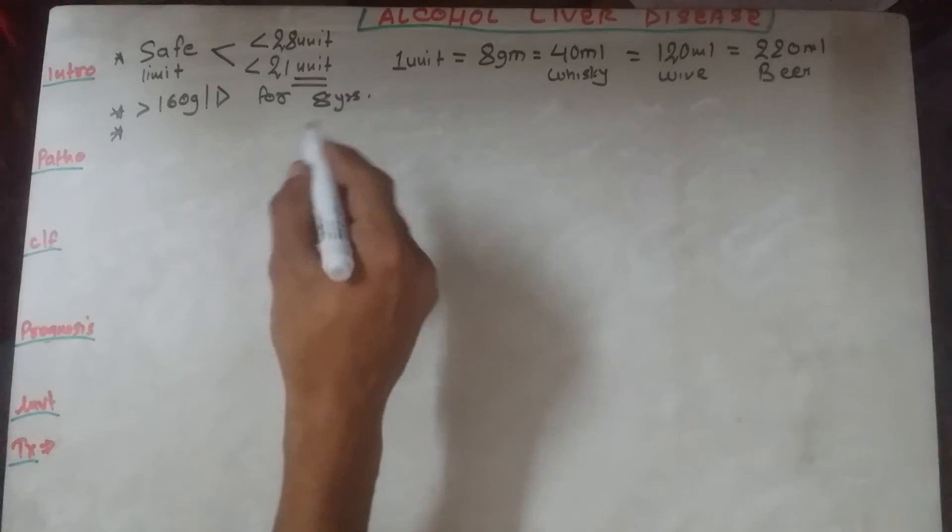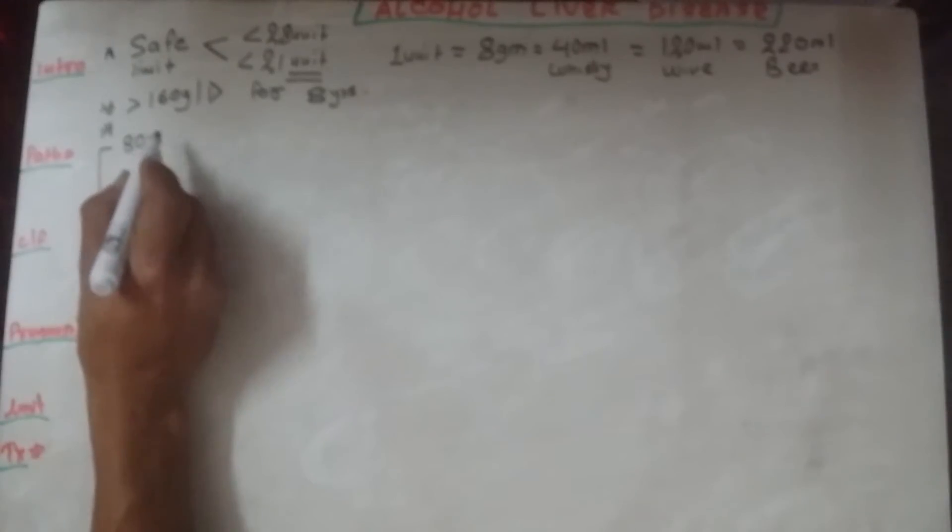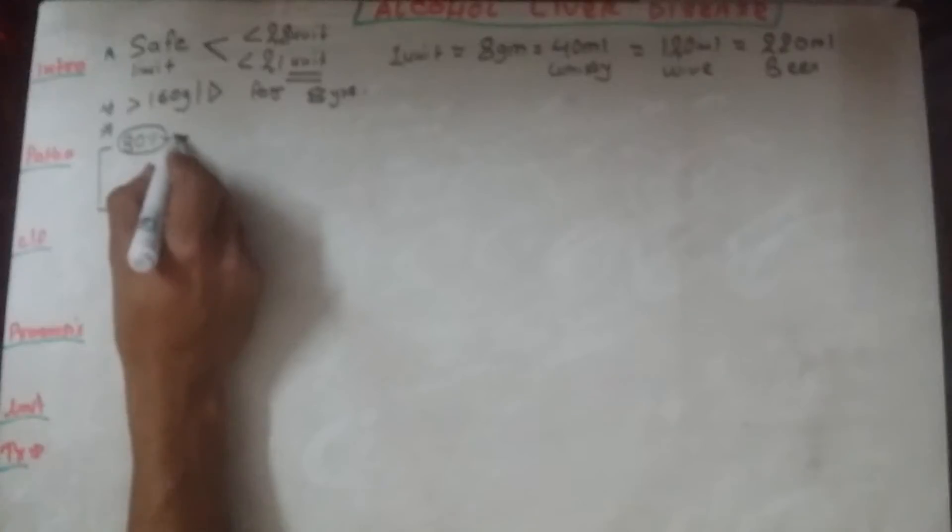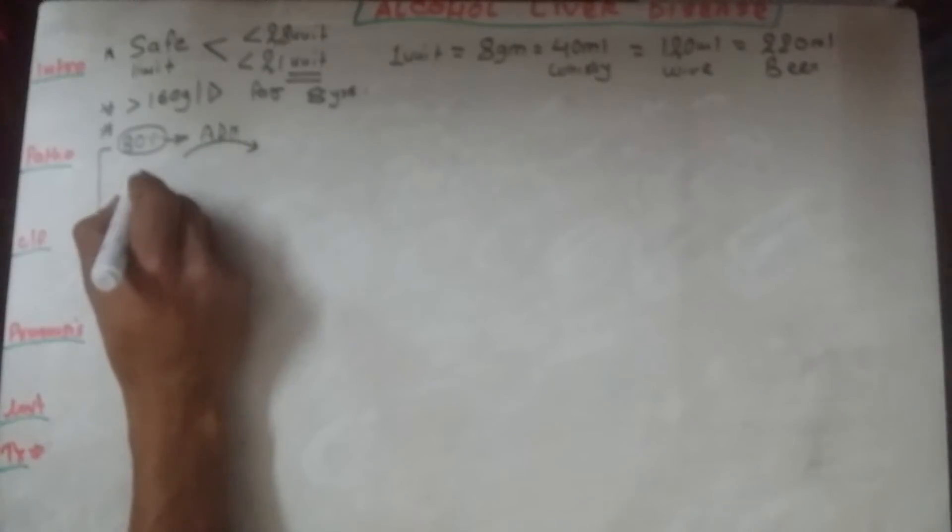Now the pathophysiology: how does alcohol cause liver disease? The alcohol metabolism occurs via three mechanisms. The first and largest amount, about 80% of alcohol, undergoes oxidation by alcohol dehydrogenase, which changes the alcohol into acetaldehyde.